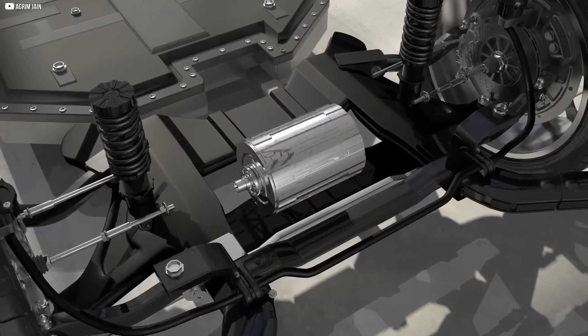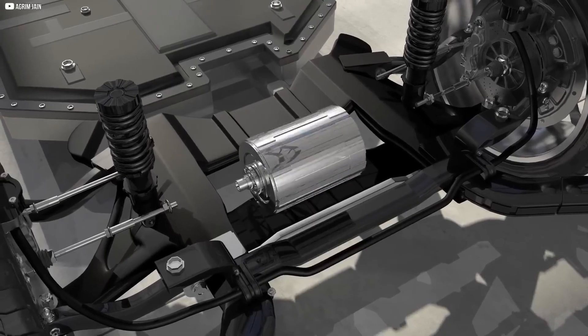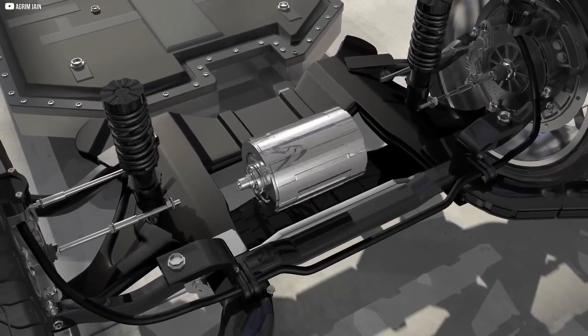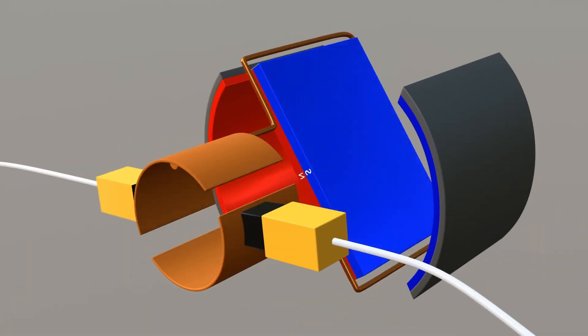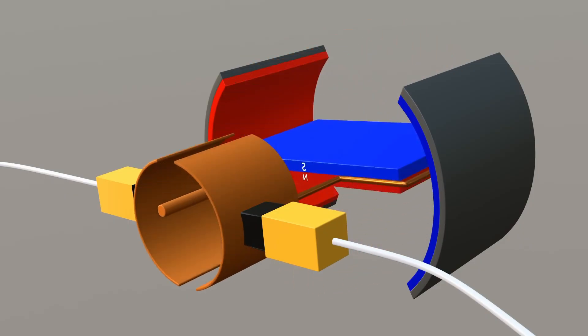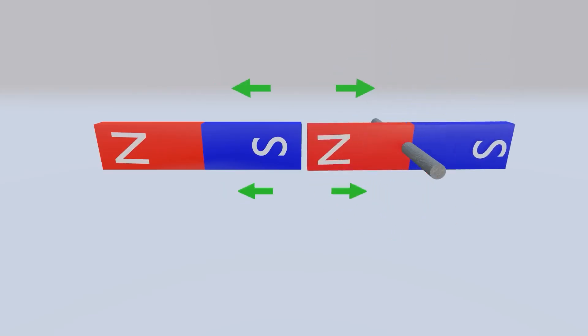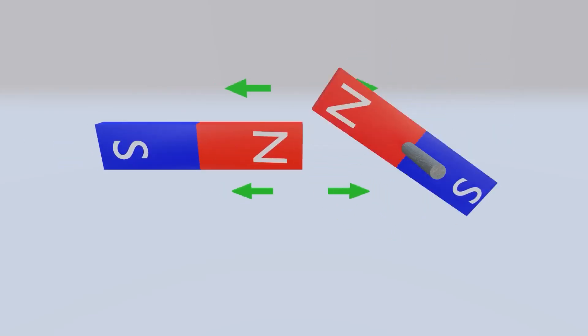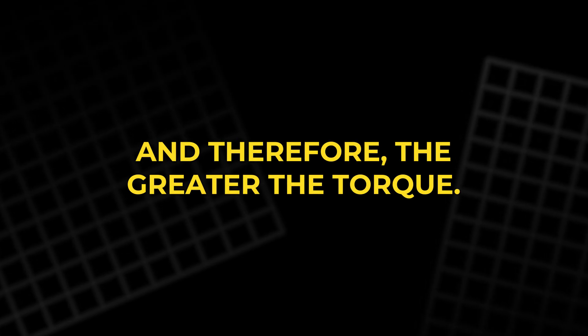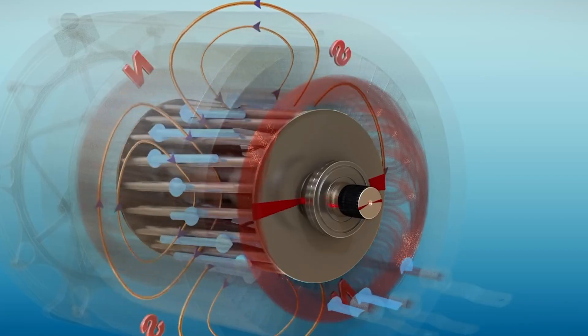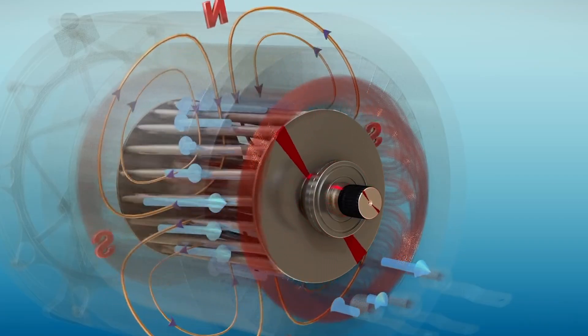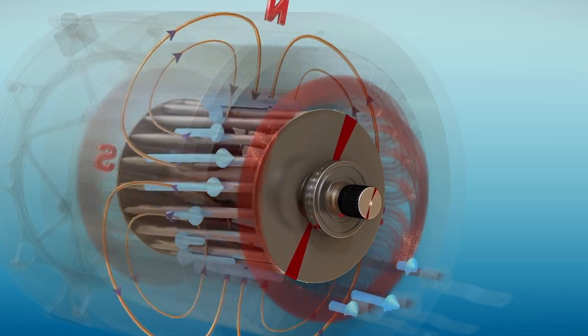But there's another part of the motor that plays a huge role in making the rotation smooth. Torque. Torque is the force that causes the motor's armature to spin. The more loops of wire in the electromagnet, the stronger the magnetic field, and therefore the greater the torque. This means that more loops translate to more power and a faster spinning motor.